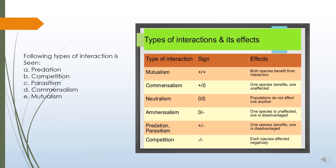Depending upon the type of interaction between organisms, we can broadly categorize them into five types. What are the five types? They are predation, competition, parasitism, commensalism, and mutualism.